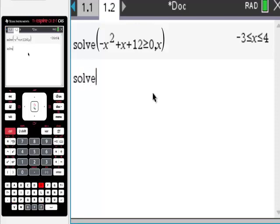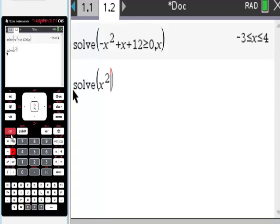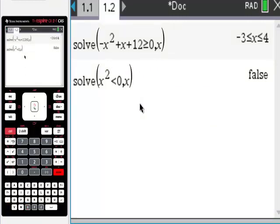Just, let's do this one really quick. Got a minute. What if we said solve x squared is, I'm going to choose less than 0 because it's really interesting, comma x. And it says false.